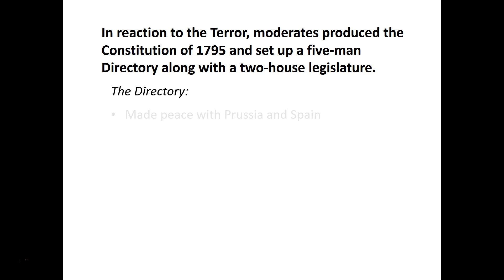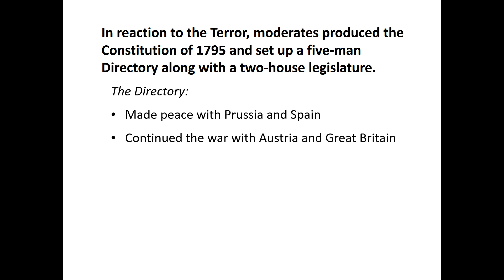Some of the actions of the Directory: they negotiate a peace with two of the European powers, Prussia and Spain, while continuing to fight Austria and Great Britain. They also create a constitutional monarchy — establishing a king, but a limited one — with the legislature being where the power lies.